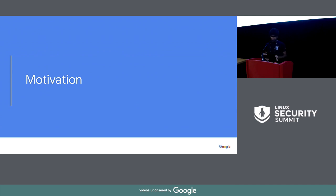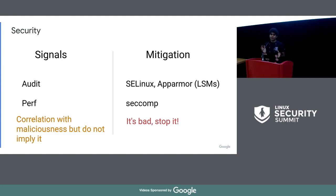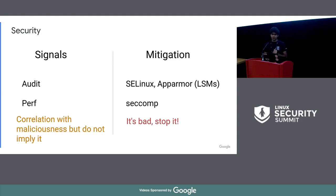So, motivation. Why do we want to do this? There are two things: signals and mitigation. Signals are things that correspond to malicious activity — you can get this data from the kernel using things like audit. I executed a process, I opened a socket — these are signals you can get from the kernel using perf events. A subset of these signals could correlate to malicious activity, but they don't mean something bad is happening on the system. And then you have mitigation — this is the classic LSM space where you notice something bad happening and you deny the action. You would typically use SELinux, AppArmor, LSM, or seccomp to reduce your attack surface. So security is essentially signals plus mitigation. That's the premise I'm going to build on.